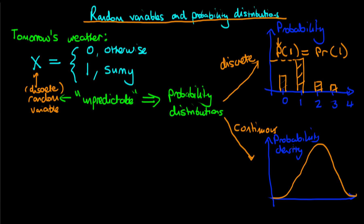Imagine we have a variable where most of its values are near 50, but it ranges between 40 and 60. We can use our probability distribution function to work out the probability density associated with, say, 45. To get that, we simply read off the vertical value, which would be P of 45, whatever the numerical value of that is.